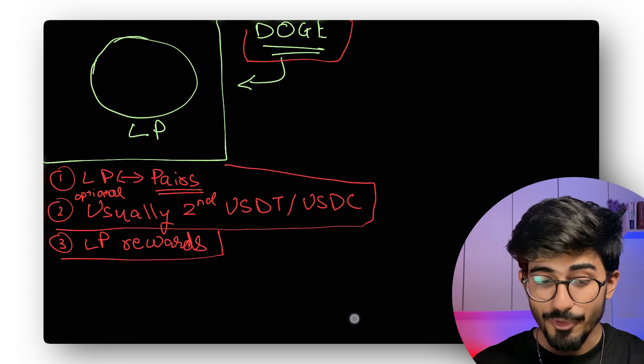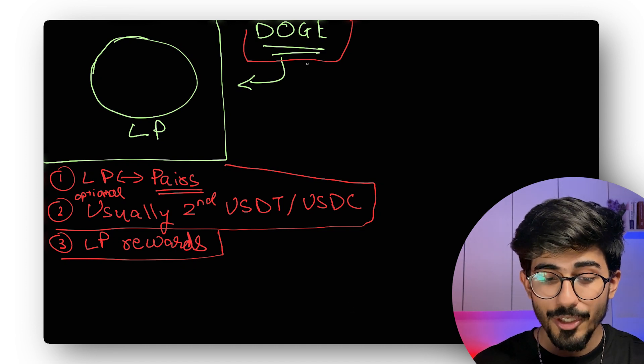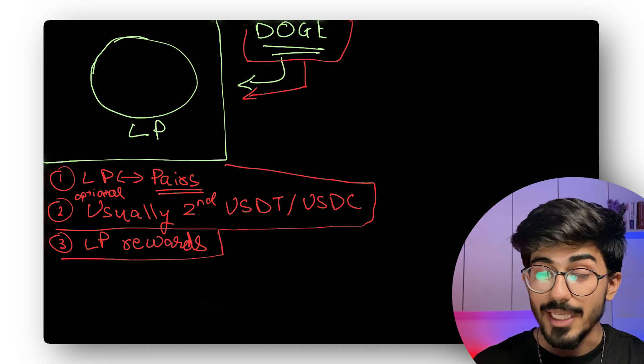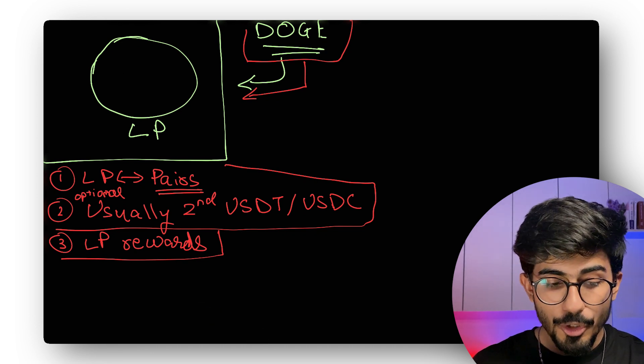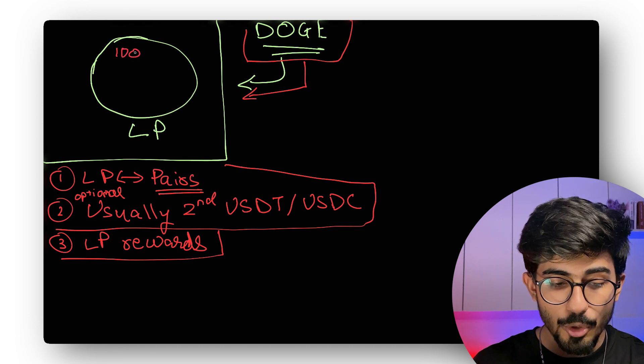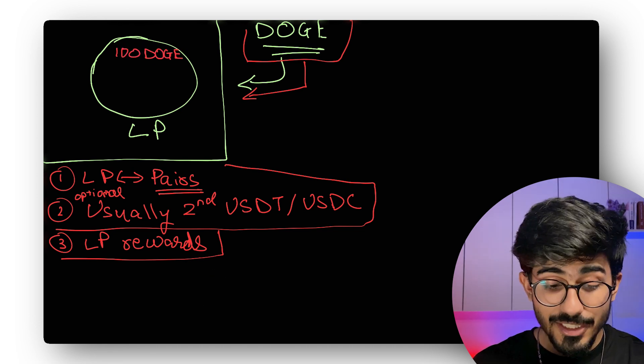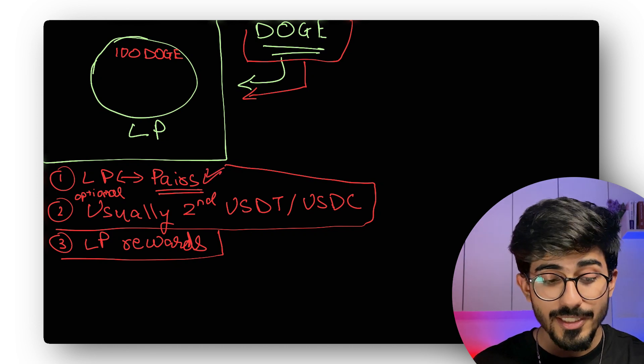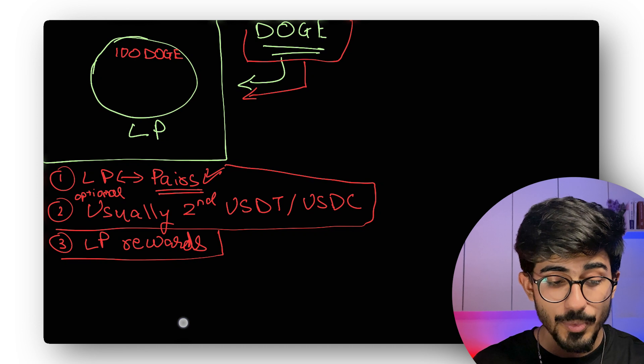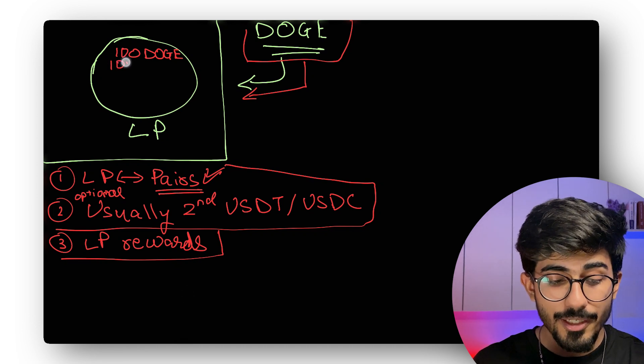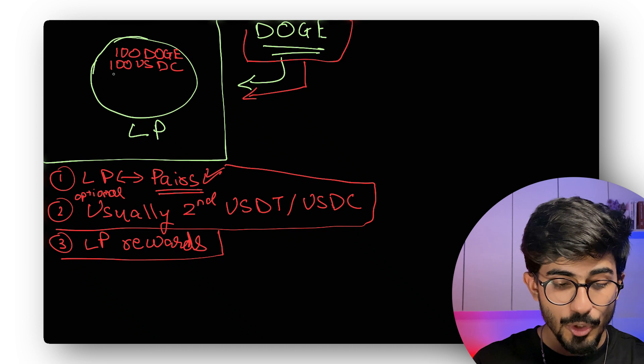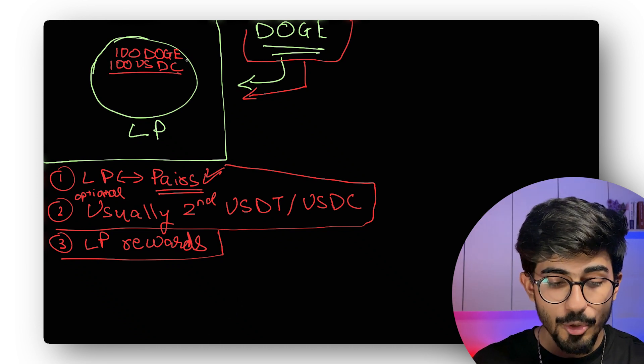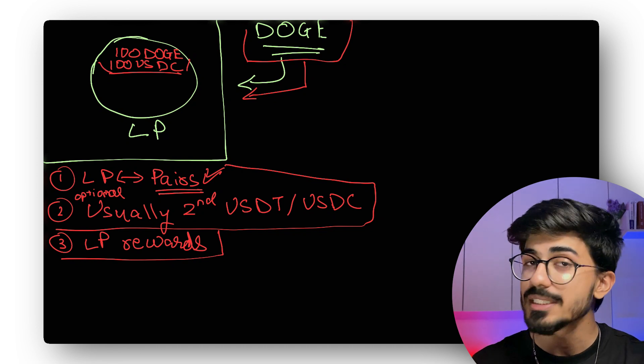So the first step that you did was create your Dogecoin. The second step was create this liquidity pool. Now, you put in, say, 100 Dogecoins and as the first principle states, liquidity pools are always created in pairs of cryptocurrencies. So that's why you also put in 100 USDC. You have created your own liquidity pool of 100 Doge and 100 USDC.